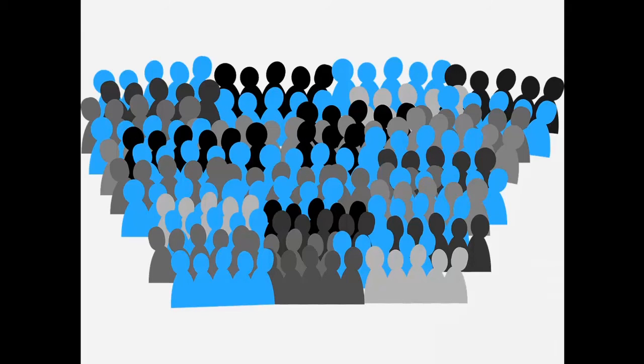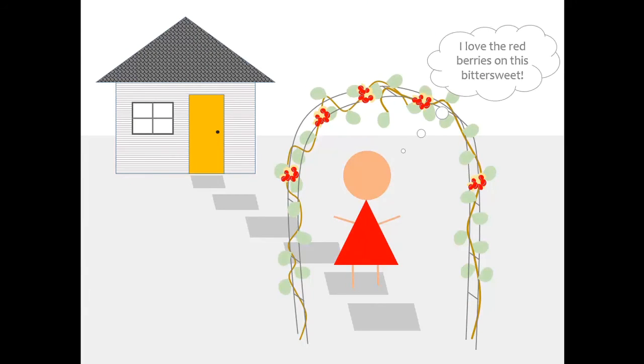Take our strangler, Oriental Bittersweet. Humans intentionally brought it to the United States from Asia because it has beautiful red fruits that people like to see growing in their yards. On its own, it wouldn't have been able to get that far. But now that it's here, it's spreading by one of the methods we just talked about, seed dispersal.